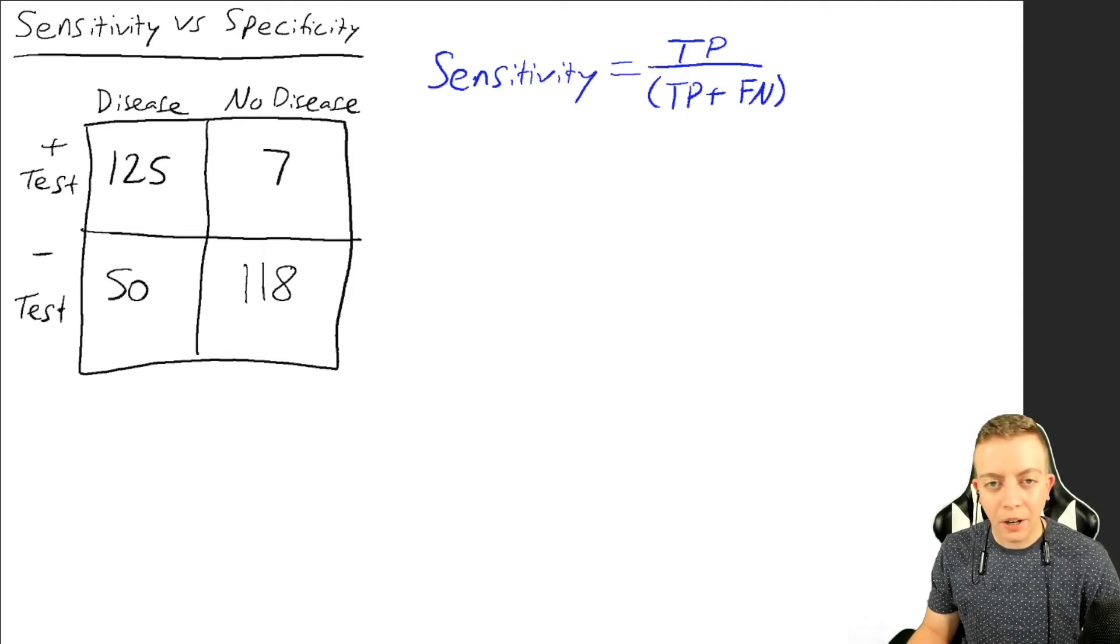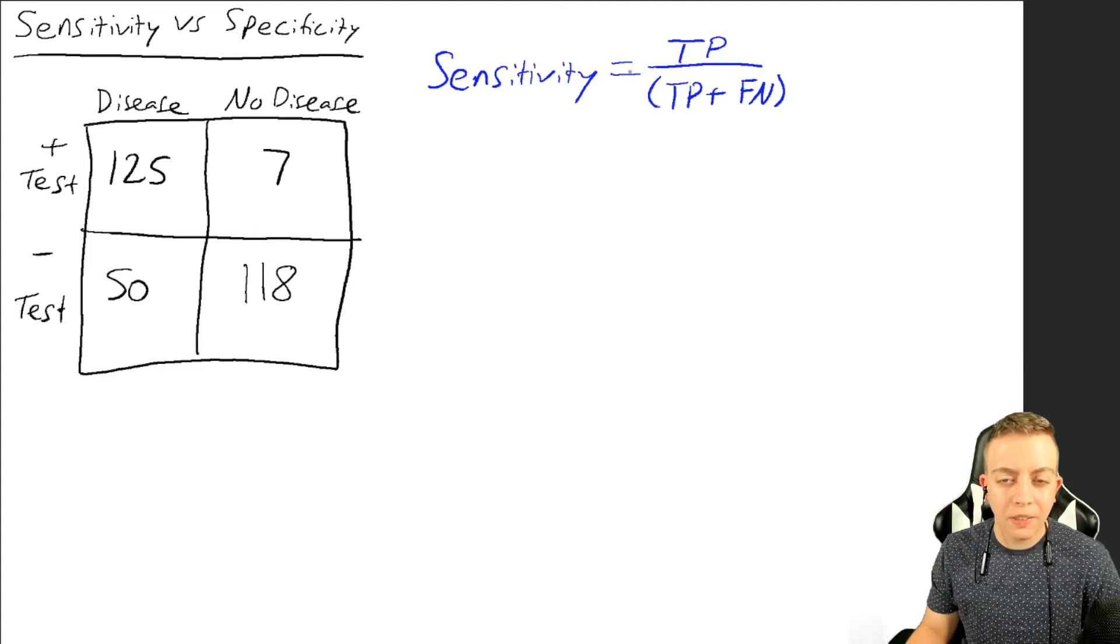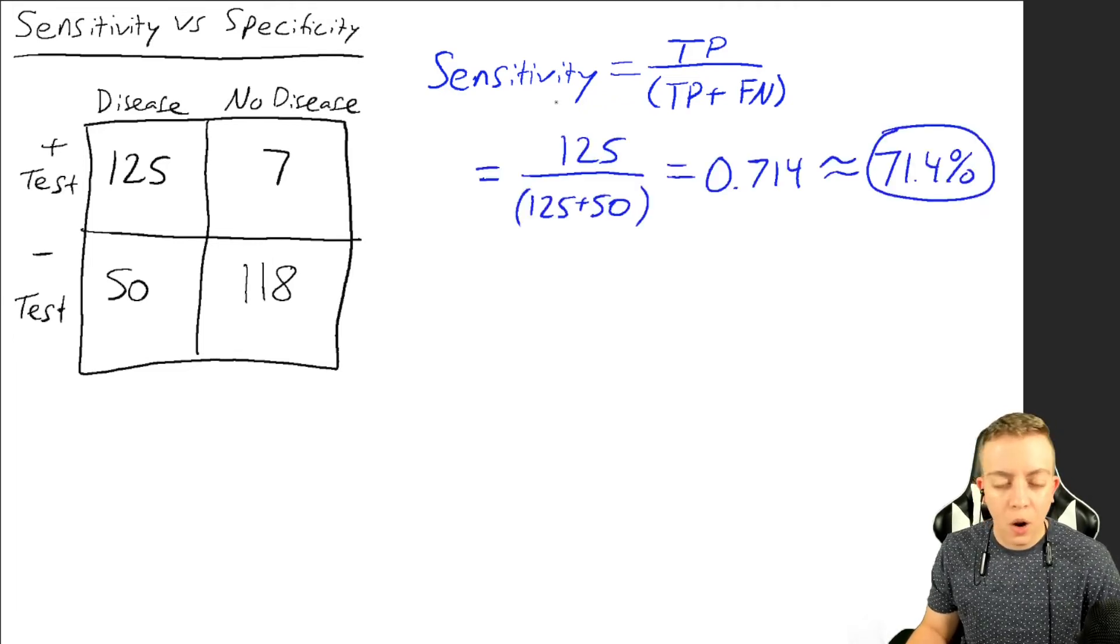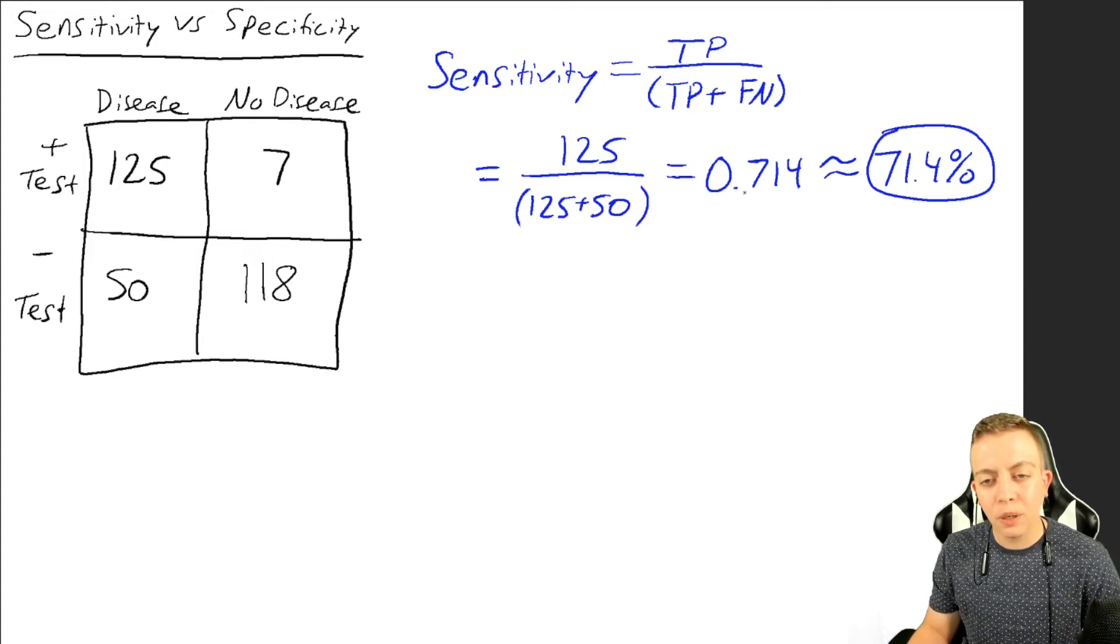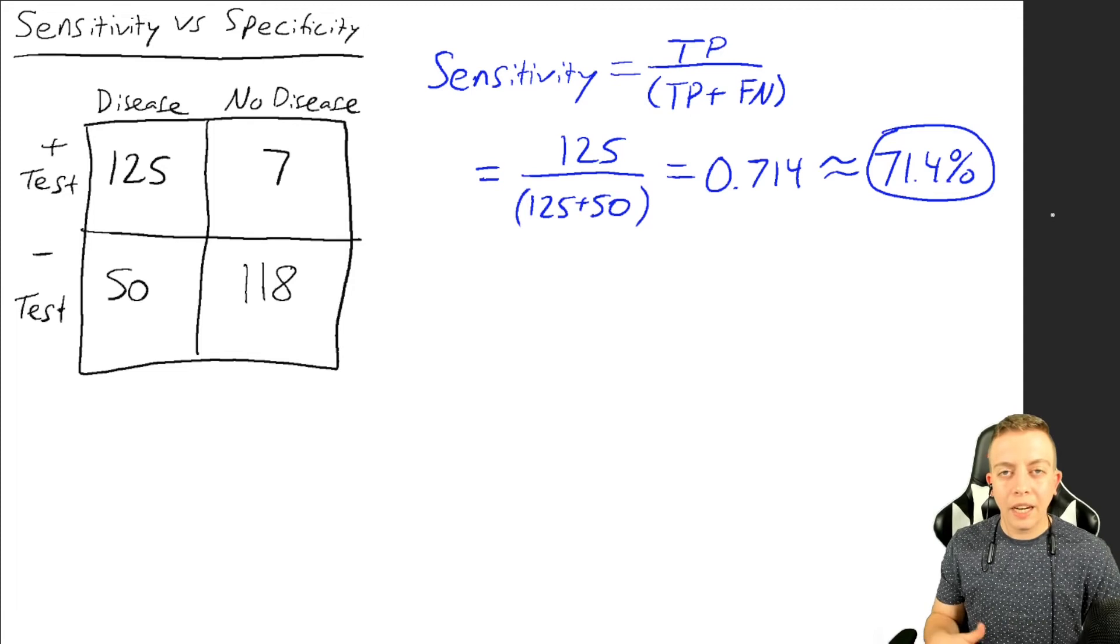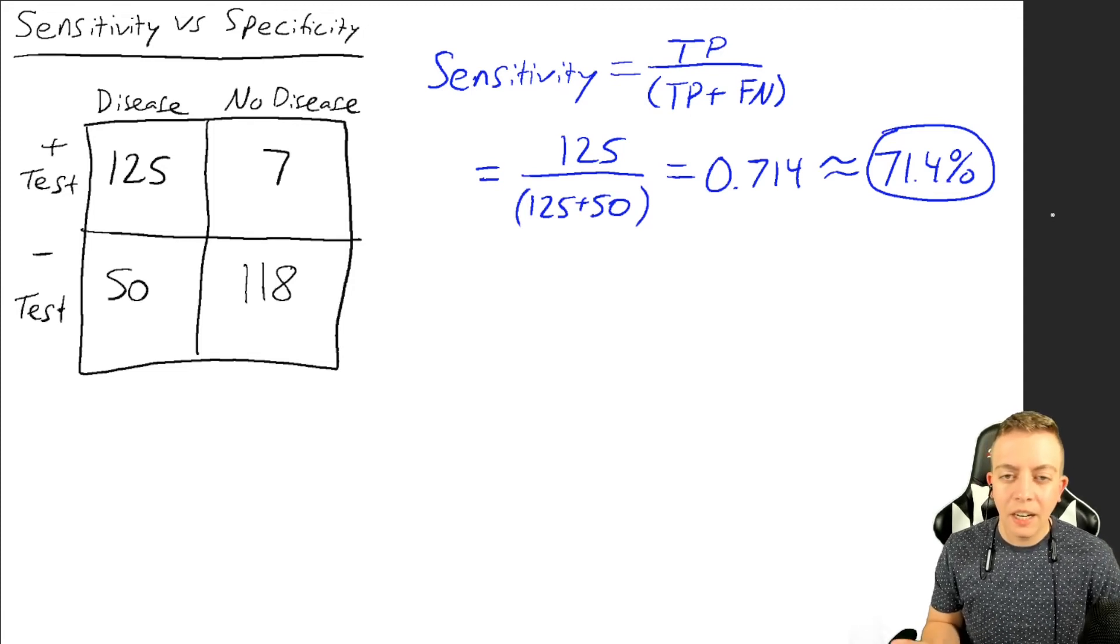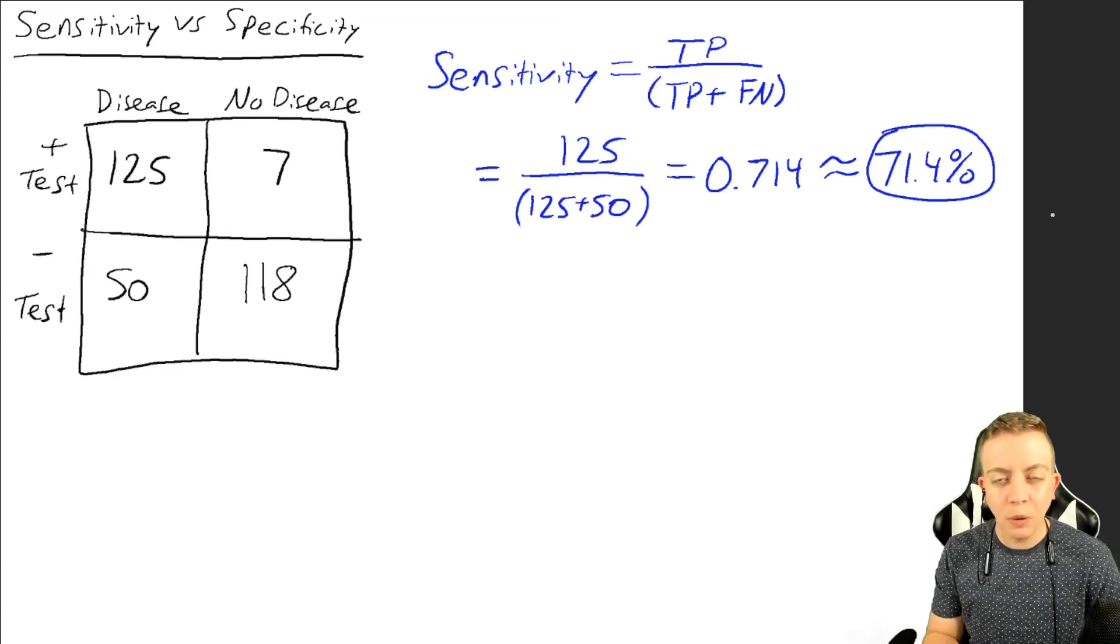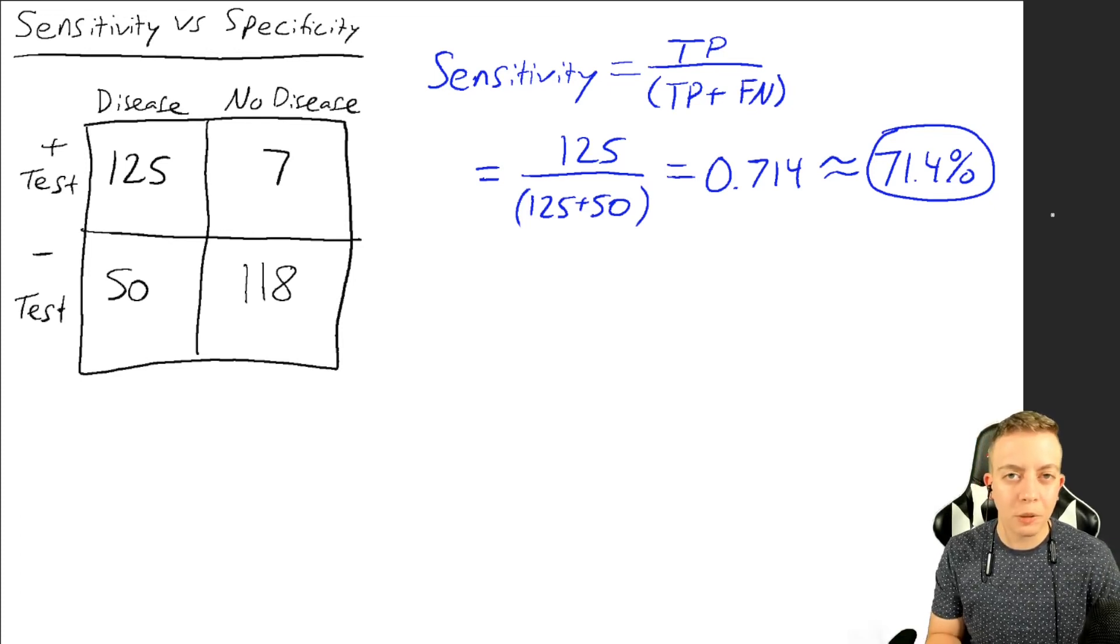How would we calculate our sensitivity? Remember, we have our true positives divided by the true positives plus the false negatives. In this case, that would be 125 divided by 125 plus 50, because that would be the total of people who have the disease. That gives us 0.714, or 71.4%. Thinking about our definition of sensitivity, out of 100% of people that we knew had the disease, about 71 of them would test positive using my test.